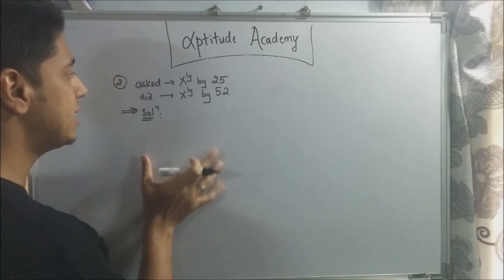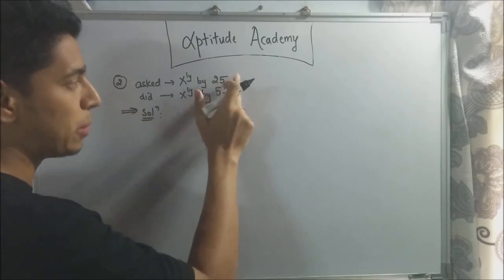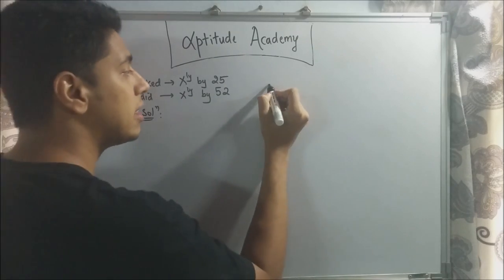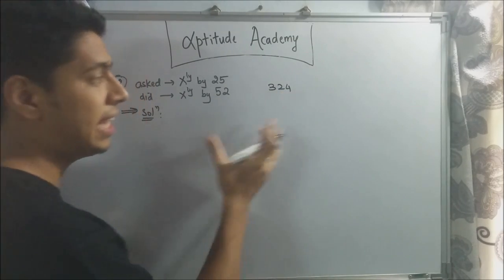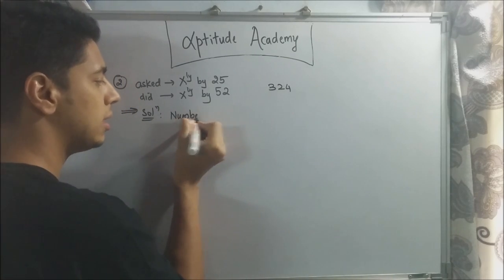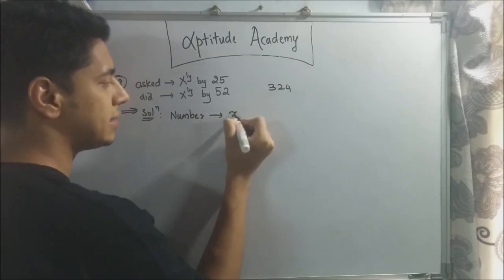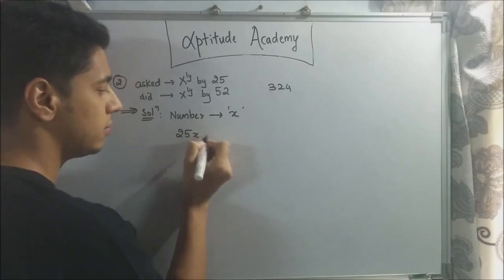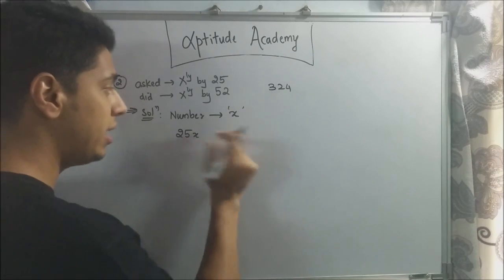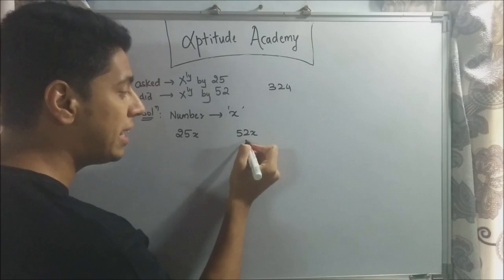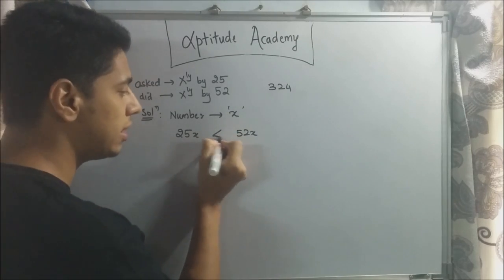For the second sum, what they have said is a boy was asked to multiply some number by 25, but what he did was he multiplied it by 52 and he got 324 more than the expected answer. Now, let the number that the boy had be equal to x. What the boy should have done is 25 into x, that is 25x. What he did do is 52 into x. Now, 52 will be greater than this. So we know that this is greater.